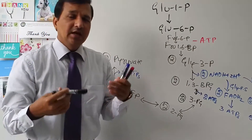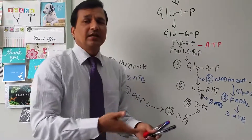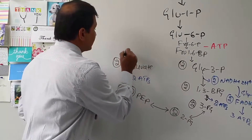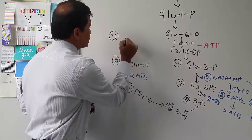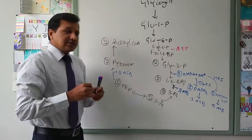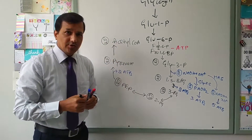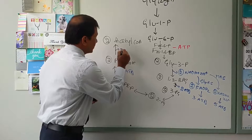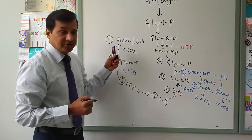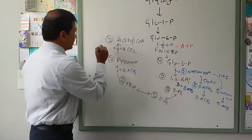The two pyruvates, in cells with mitochondria and sufficient oxygen, enter the mitochondria and are converted into two acetyl-CoA molecules. Pyruvate is a 3-carbon compound and acetyl-CoA is 2-carbon, so 2 molecules of CO₂ are released (one from each pyruvate), giving 2 CO₂ total from the two pyruvates converting to two acetyl-CoAs.